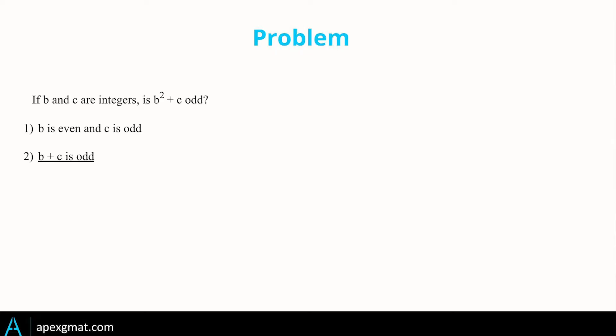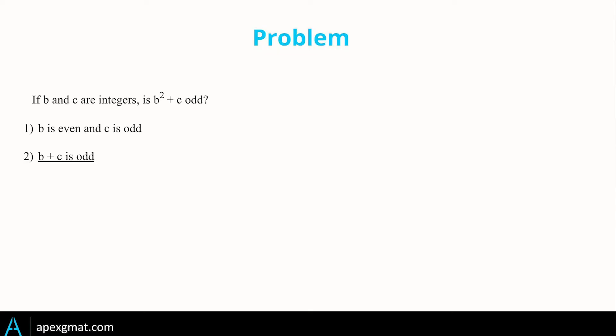For Statement 2, we have b + c is odd, and immediately we might dismiss this — which would be a mistake. The reason we tend to dismiss it is that Statement 1 was so straightforward in addressing what we needed that Statement 2 feels almost too complex, since b and c aren't separated from each other. The GMAT may have lulled us into a sense of security with Statement 1, which I think is one of the really neat structural features of this problem.